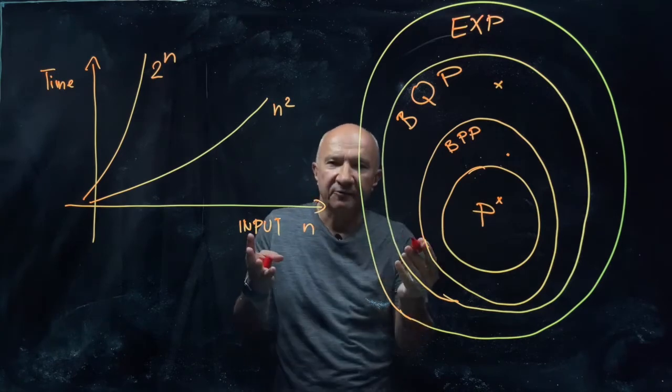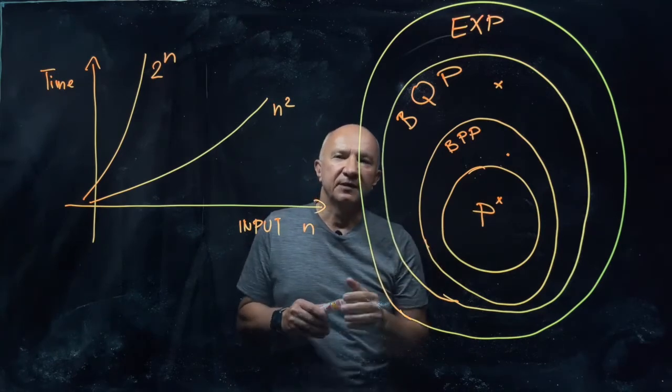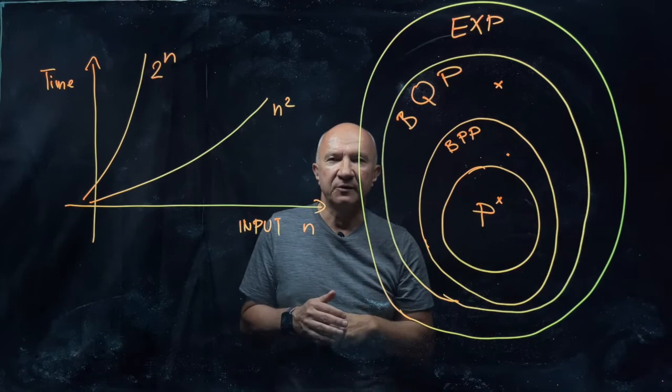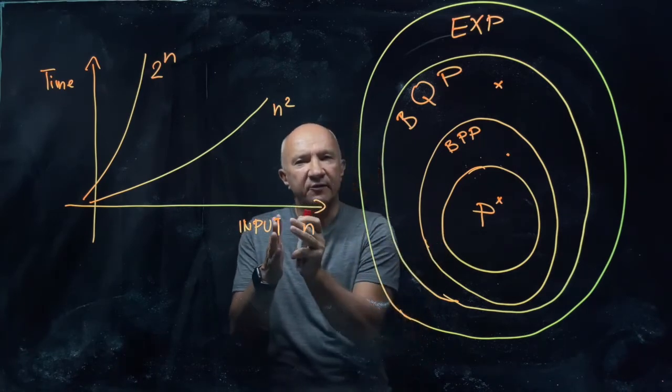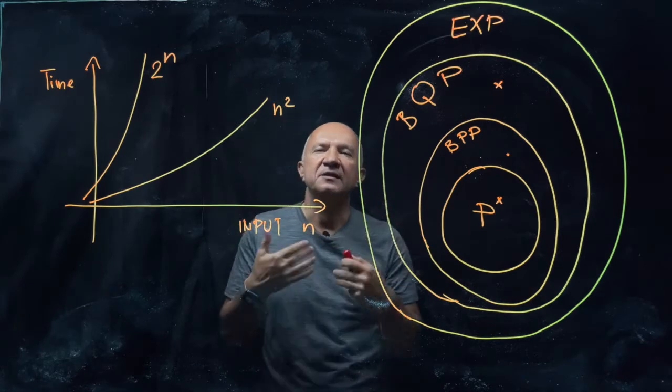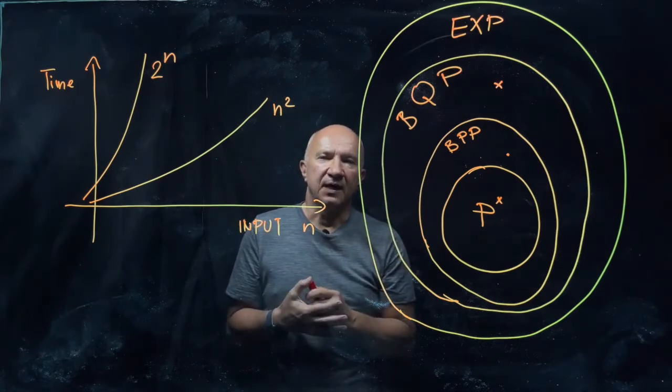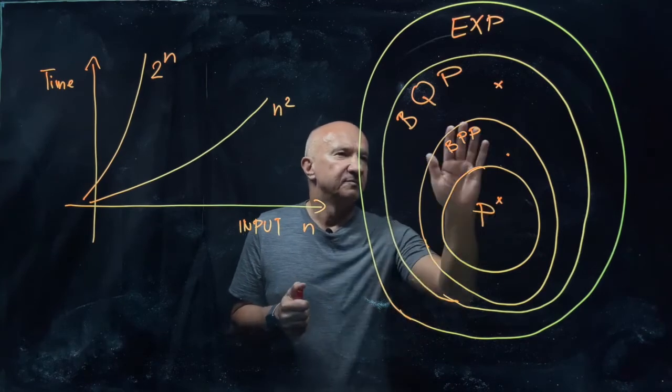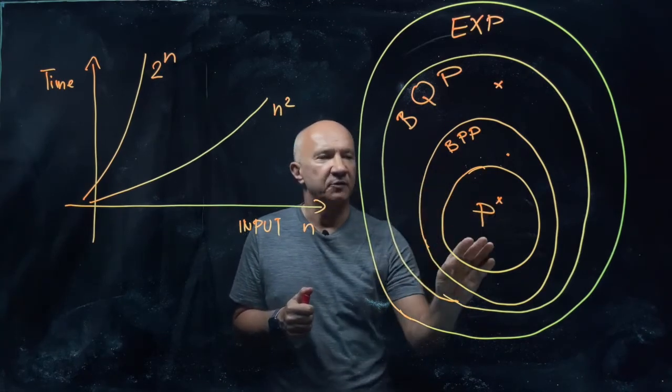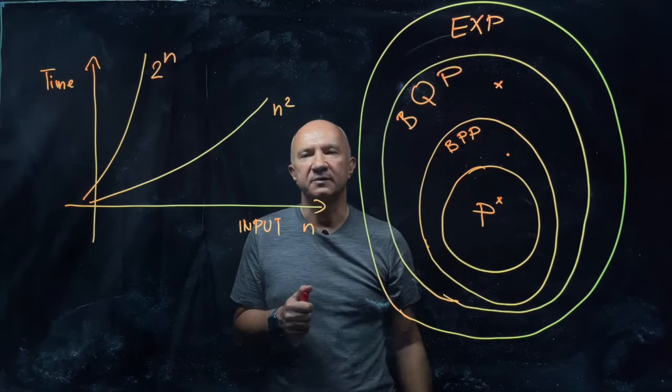...for example, factoring of large integers. So if we want to decompose a given number into prime factors, and if we increase the size of the number, it's getting exponentially difficult to find those factors. And that is the case for any type of classical computation, be it deterministic or probabilistic - we simply don't know how to do it. Now we know how to do it with a quantum computer.